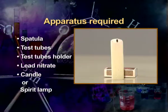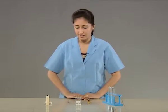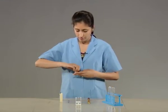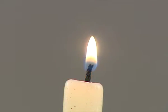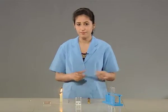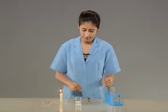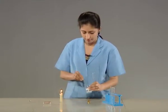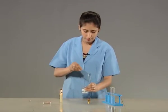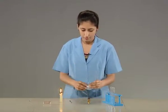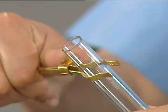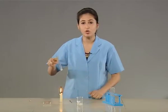We can also use a spirit lamp. Let us first light the candle, take a test tube and add one or two spatula of lead nitrate to it. Now, hold it with the help of a test tube holder and heat it over the flame.